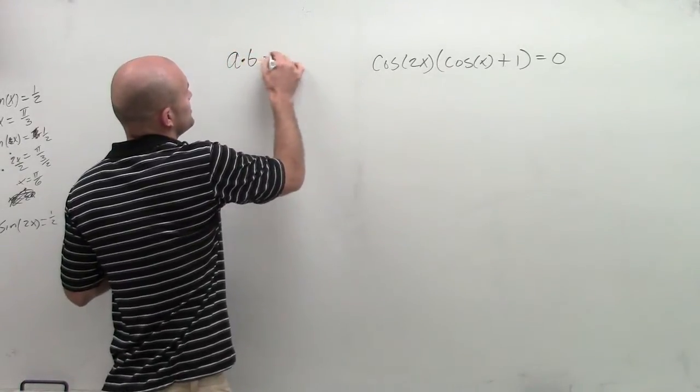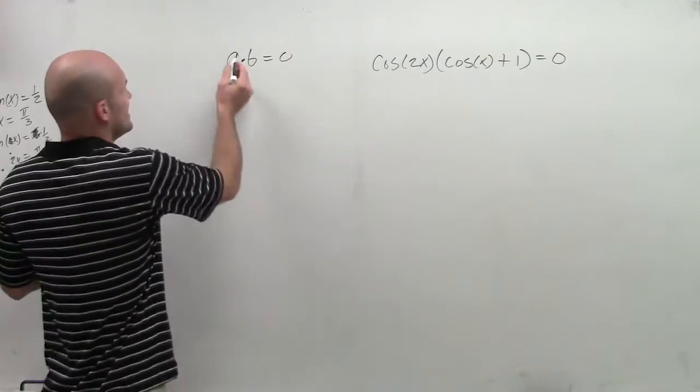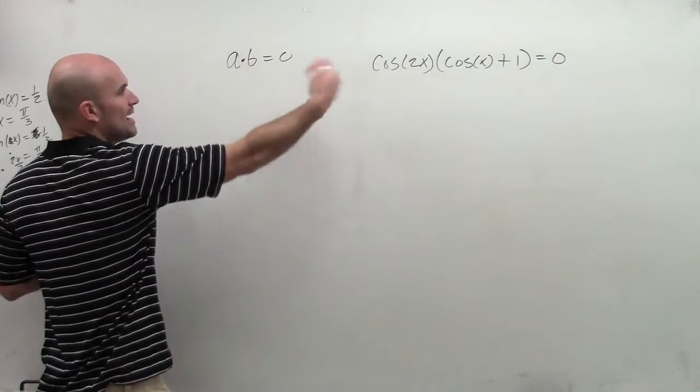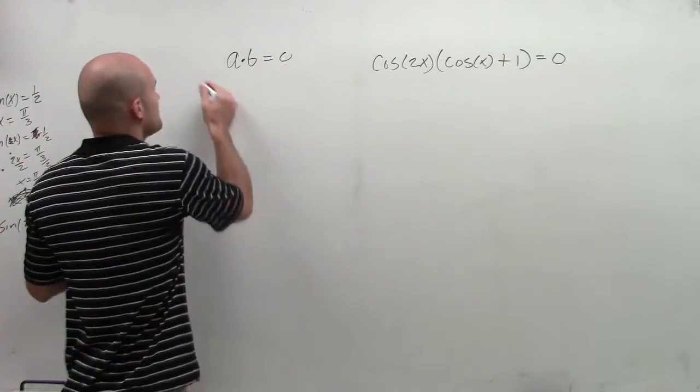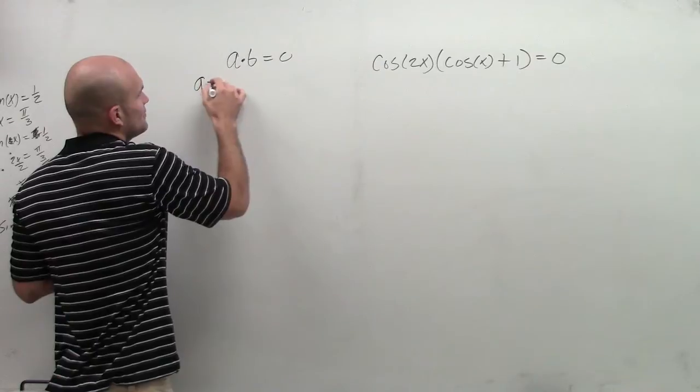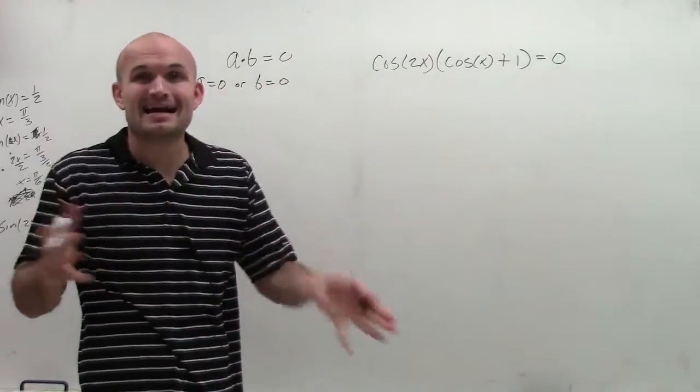Because if you remember, when we have a multiplication problem that equals 0, we can apply the zero product property, which states if you have two numbers or two binomials or two monomials or two polynomials or two terms that are multiplied to give you 0, that means a equals 0 or b equals 0. So one of them has to equal 0.